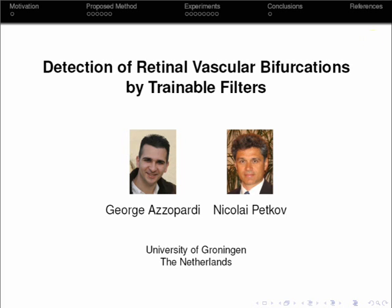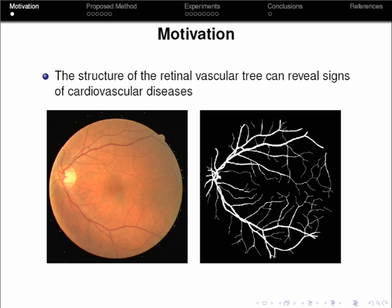The application at hand deals with retinal fundus images which mainly concerns the field of ophthalmology in the medicine community. I will be showing how the trainable filters we are proposing can be effectively used to automate an important process in this application. The figure on the left shows a typical image of a retina and next to it is the binary segmentation of the same retina. As you can see the vessel structure in the retina looks like a tree with several branches. And it is known that the spatial arrangement of these so called vascular bifurcations may reveal signs of some cardiovascular diseases such as high blood pressure and atherosclerosis.